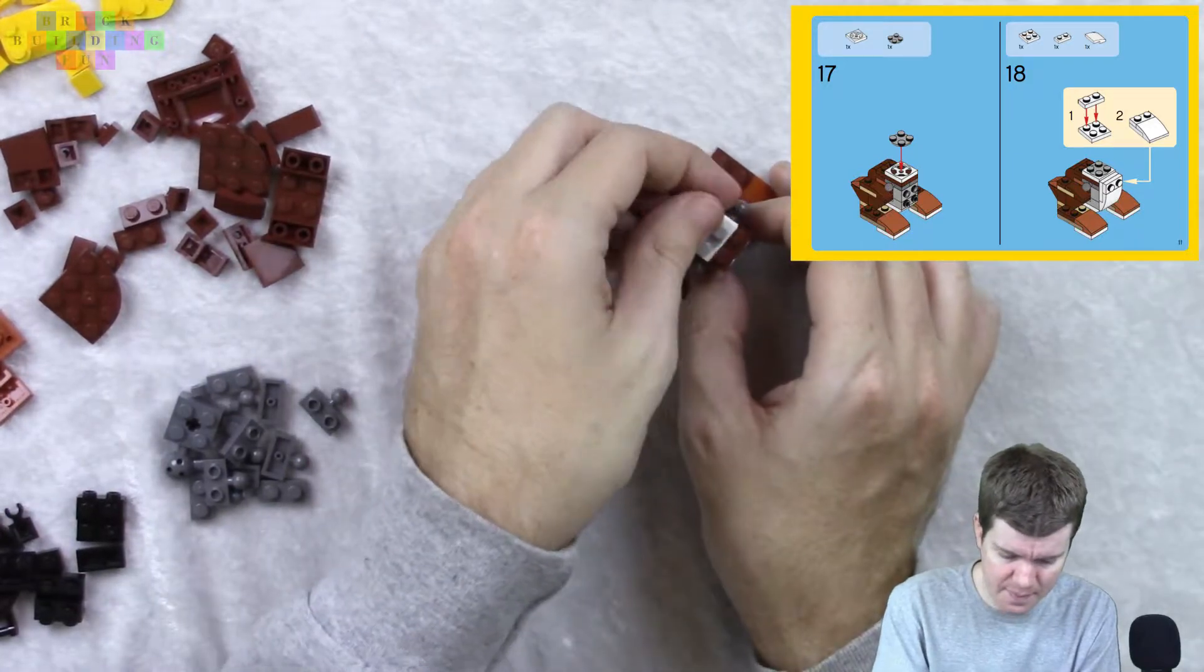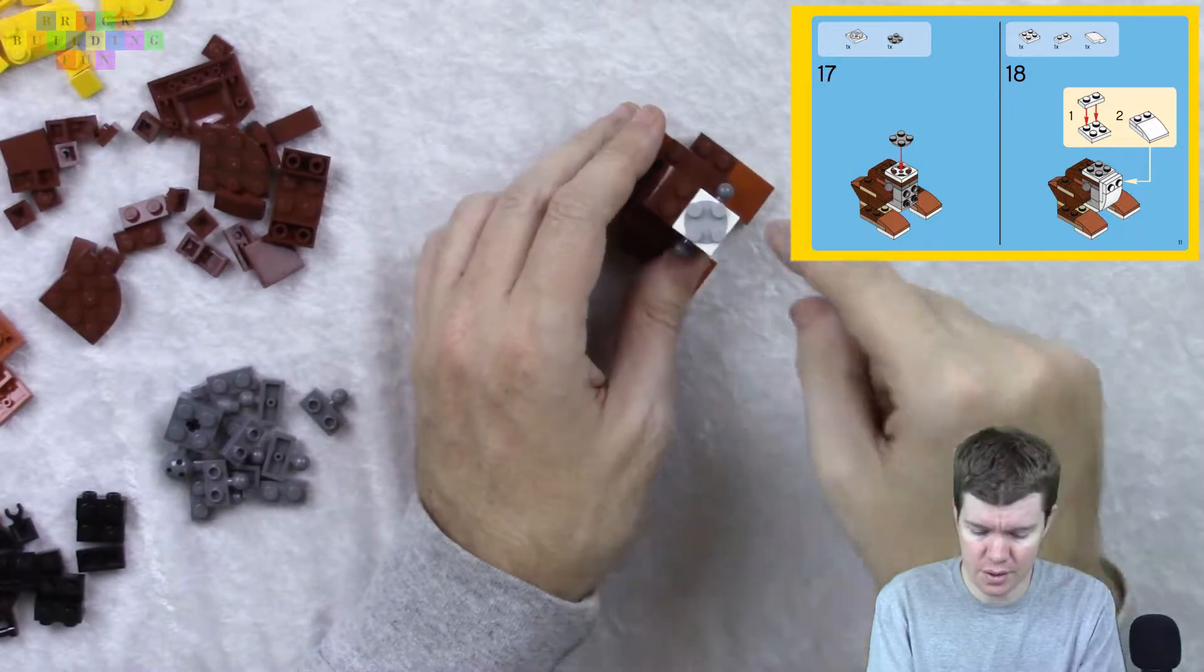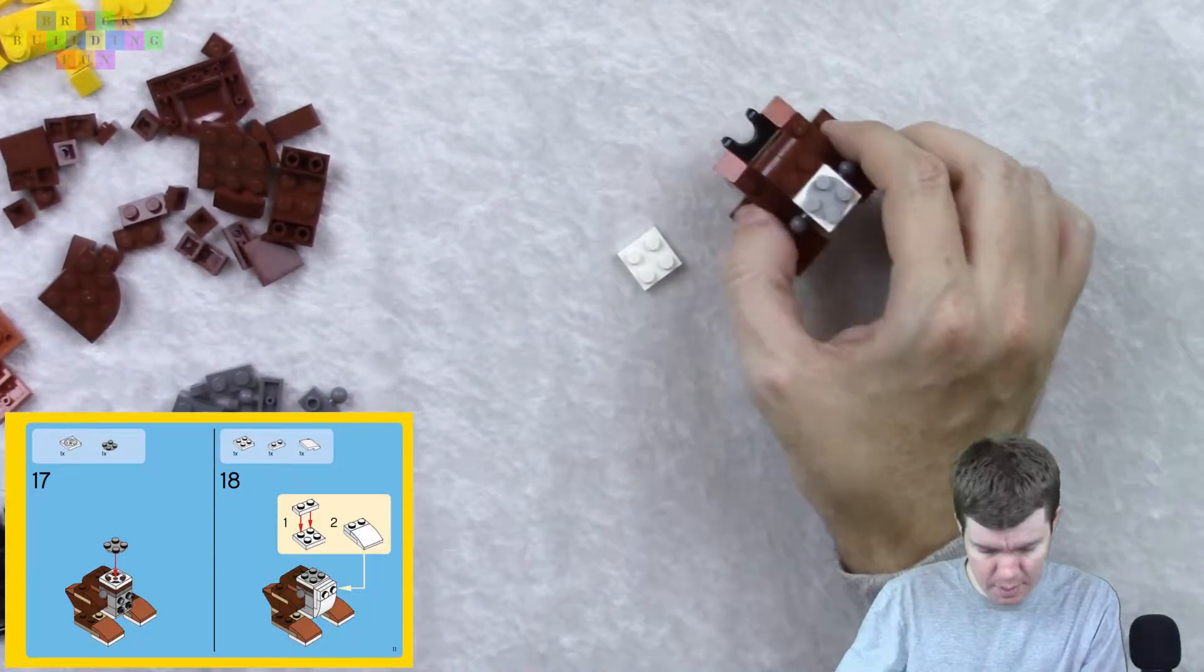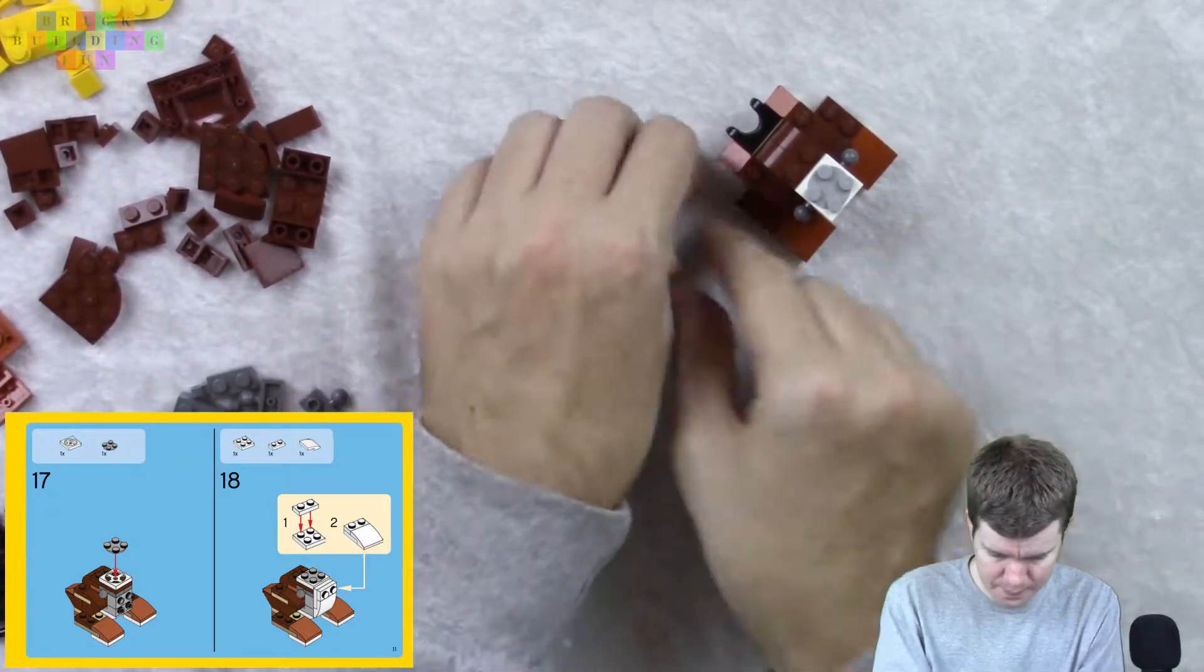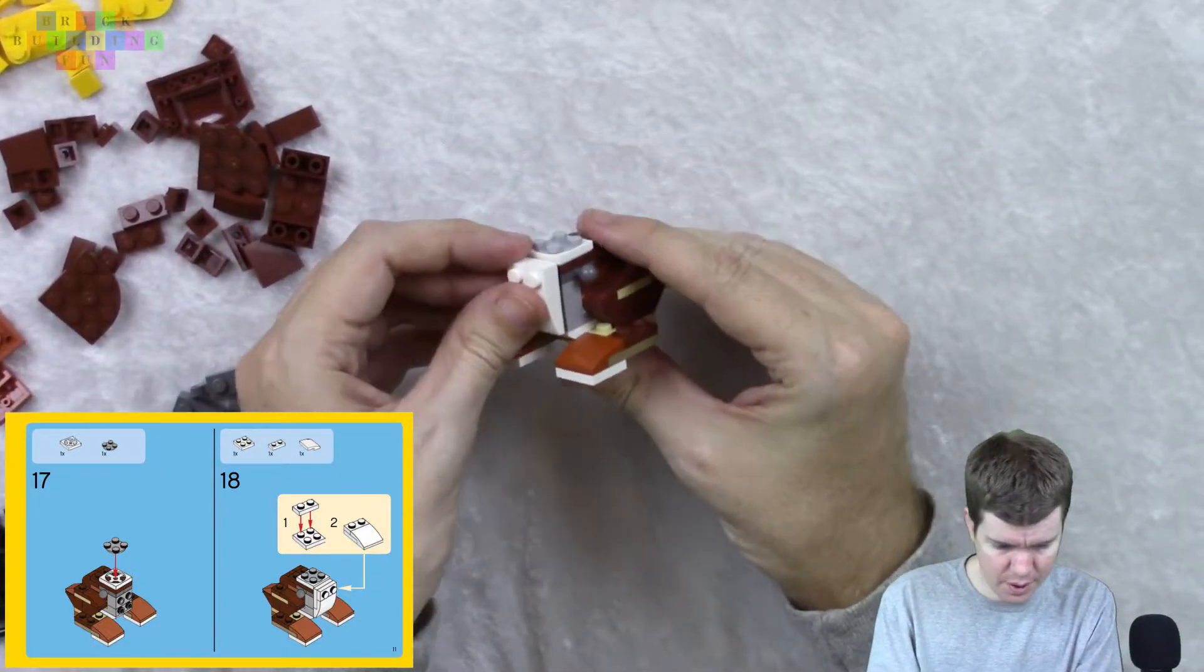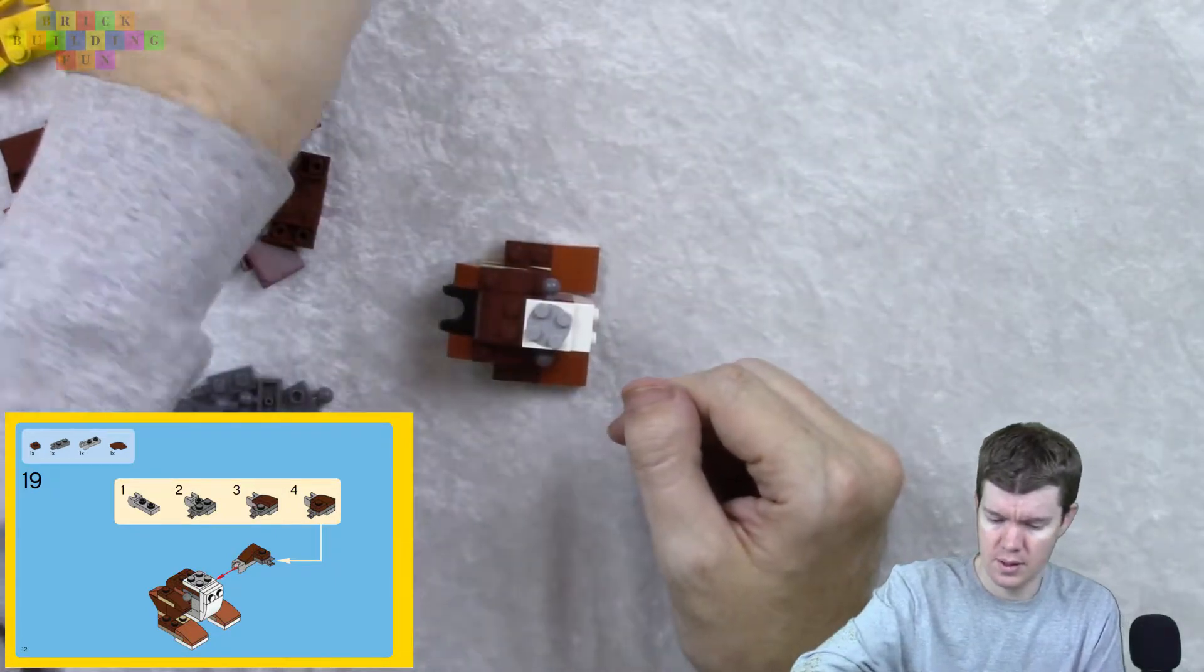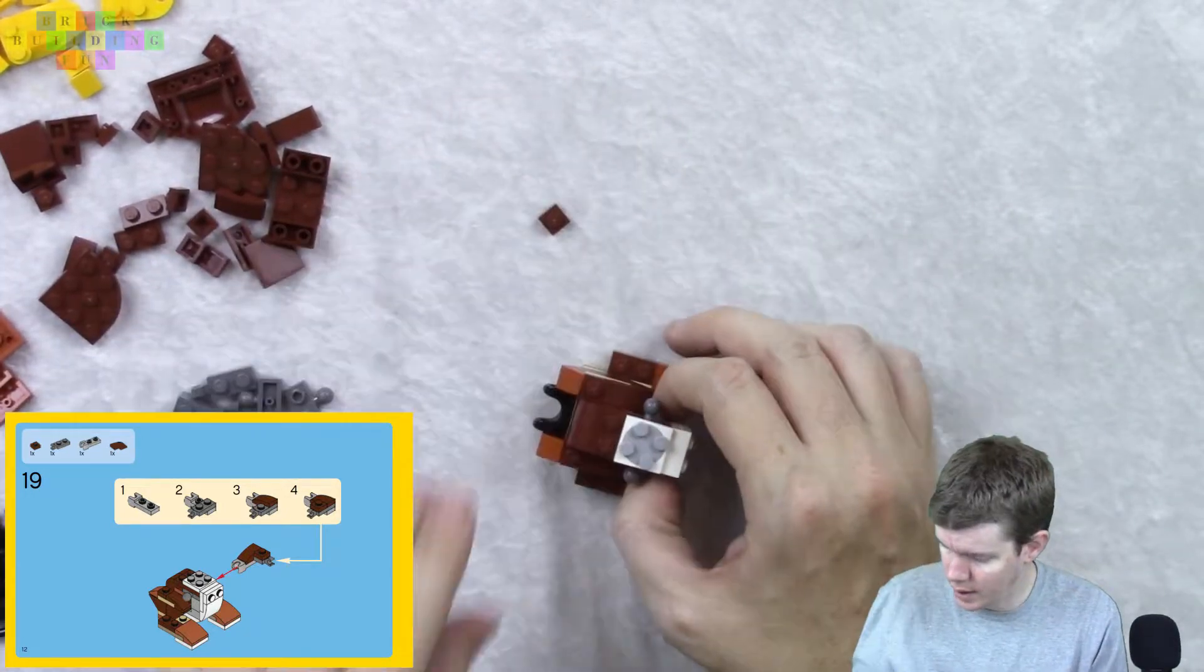Here's this spinny piece. So, the instructions are assuming that this is the first thing I've built. Or that I've completely taken this apart too. But, no. Saving myself a step. And one of these. A bunch of white pieces here. Okay. That goes like that. That goes like that. And that goes on there. Like so. What's next? Next, we do a little thing. Here.